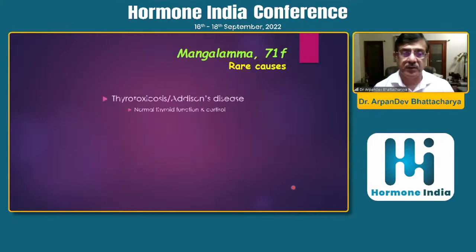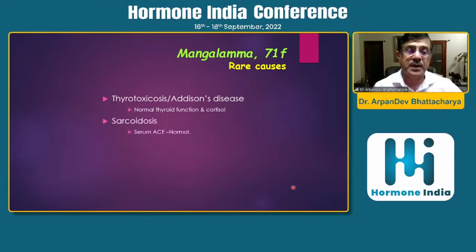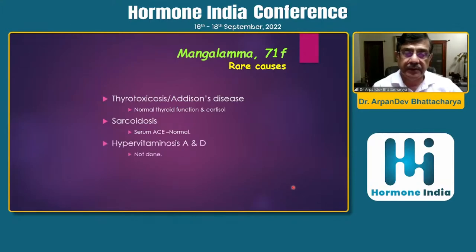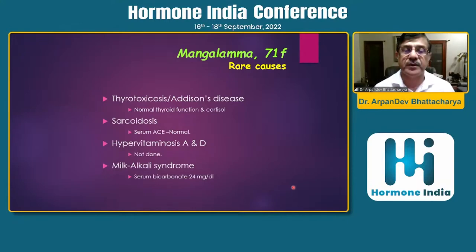Now comes the real cause — we need to pick it up. Thyrotoxicosis and Addison's disease: thyroid function and cortisol were normal. ACE level (angiotensin-converting enzyme) was normal. Vitamin D was not elevated — it was normal. And milk-alkali syndrome was unlikely because serum bicarbonate was only 24.